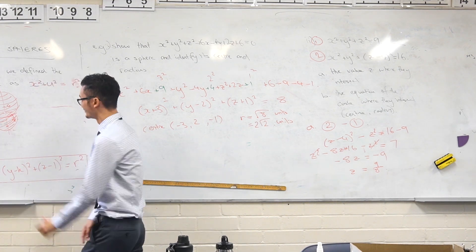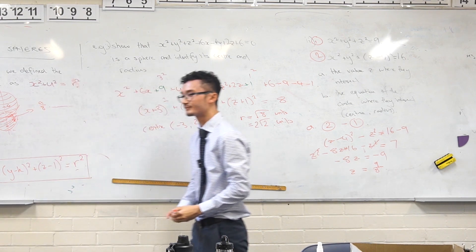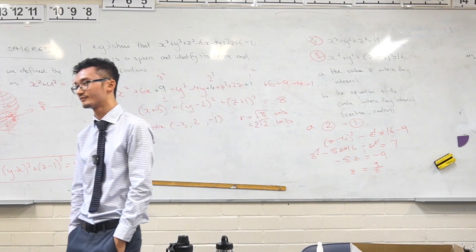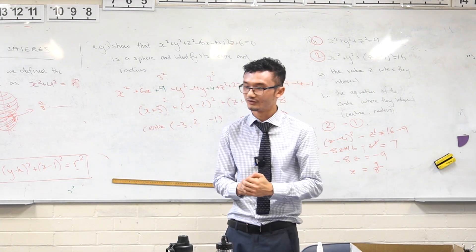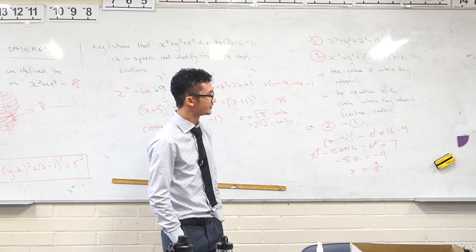The intersection is at z = 9/8. That's the z value where they intersect.